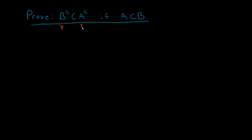The first and last lines of my proof are given. The first line is going to be: I want to start with an arbitrary element inside of B complement. And then I'm going to go about my proof and, near the end, finally deduce that my X is inside of A complement. When I can start in B complement and finish up in A complement, that will mean that I'll have done my proof.